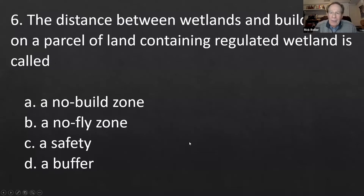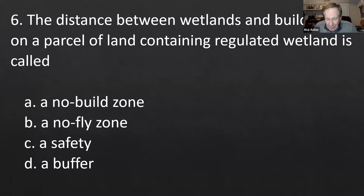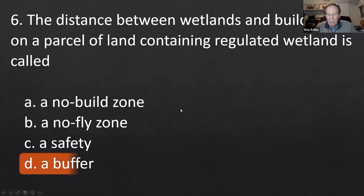Number six covers wetlands. They're very important — especially around the Great Salt Lake — because of the variety of birds that need them for migration and habitat. We have wetlands, and usually there's an area called a buffer zone — a distance between the wetlands and buildings. A parcel of land containing a regulated wetland is called a buffer zone.